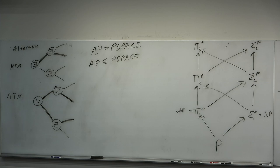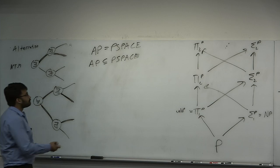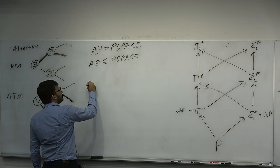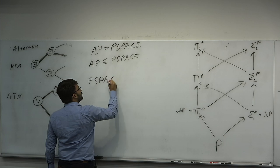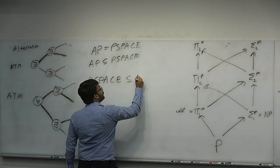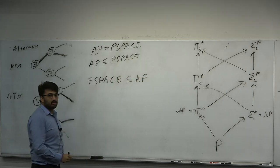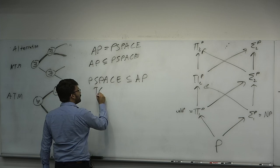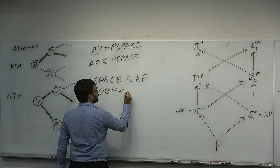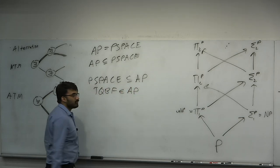Basically, the simulator of an AP machine in polynomial space is just the TQBF algorithm — it used, in fact, linear space. So AP is in PSPACE. You can simulate such a machine with no more than polynomial space overhead. To prove that PSPACE is a subset of AP, we argue that AP is closed under polytime reduction and that TQBF — which is PSPACE-complete — is an element of AP.